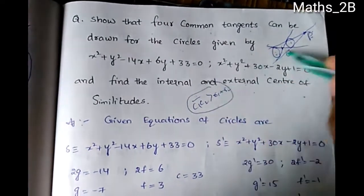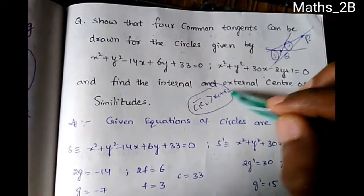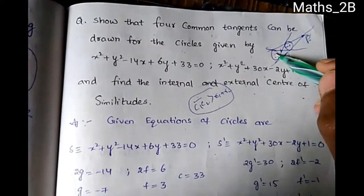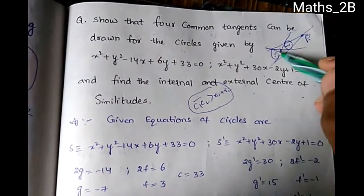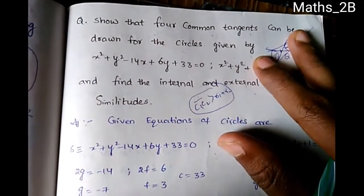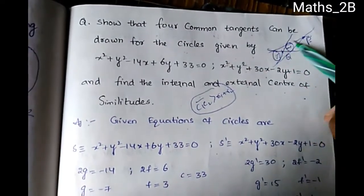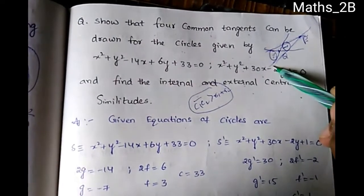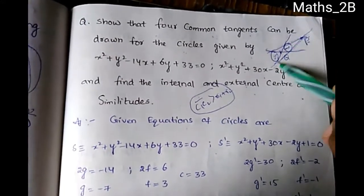C1C2 distance greater than R1 plus R2. If this condition holds, you can see two direct common tangents and two transverse common tangents can be drawn. So here is tangent one, two, three, and four — four common tangents in total.